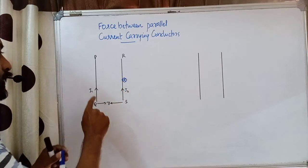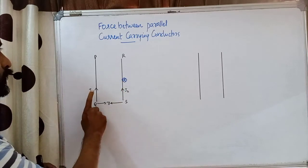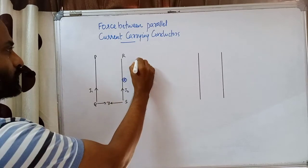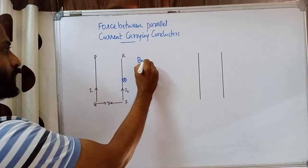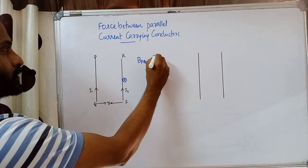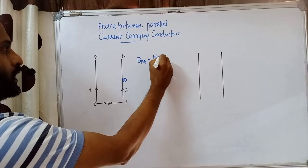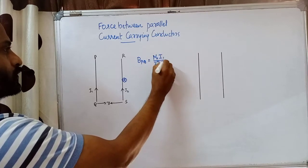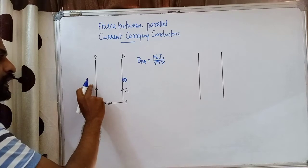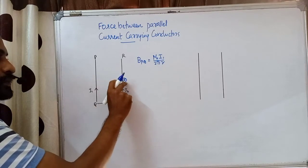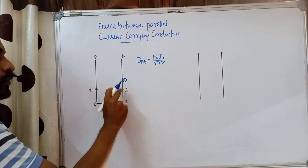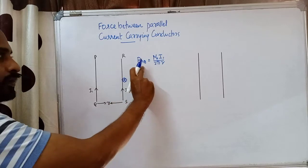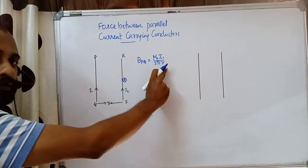The magnetic field of conductor PQ at this point is B_PQ, which equals μ₀i₁ divided by 2πr. This is the magnetic field of the current-carrying conductor PQ at the chosen point on RS. Now, conductor RS is situated in this magnetic field, so it should experience a force.